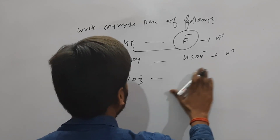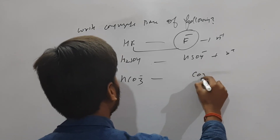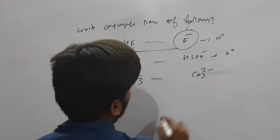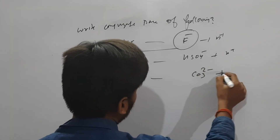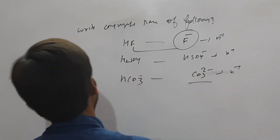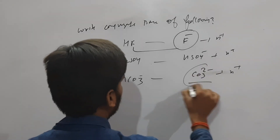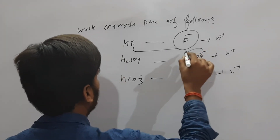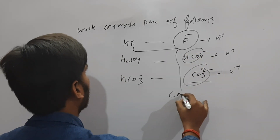HCO3⁻ का conjugate base है CO3²⁻, क्योंकि H⁺ remove हो गया, तो एक इसमें और negative charge आएगा। तो यह क्या है — conjugate base। यह क्या है — conjugate base।